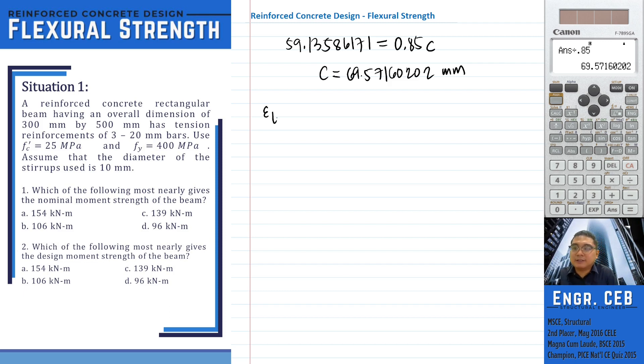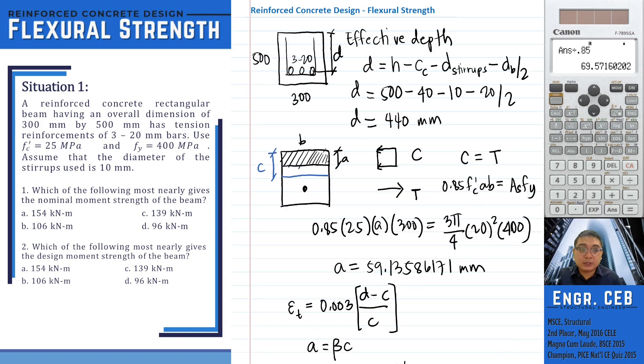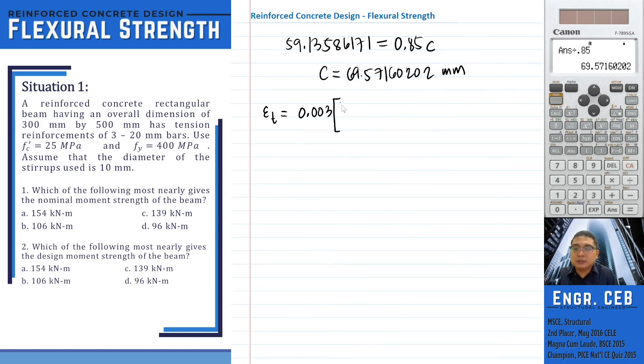We can now compute the net tensile strain. That is 0.003 times the depth, which is 440, minus C. The net tensile strain is 0.01597325865.